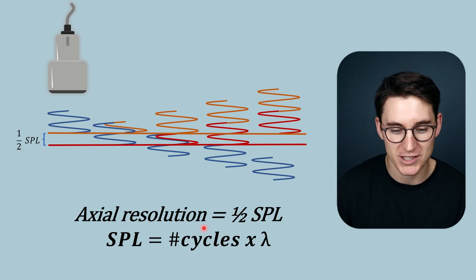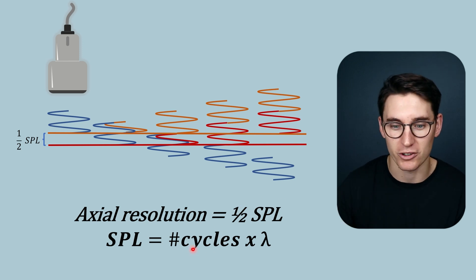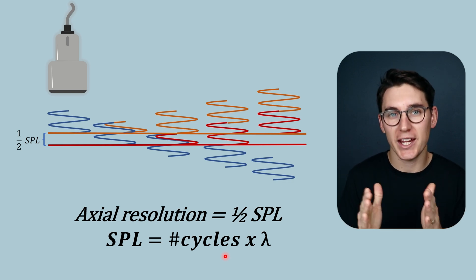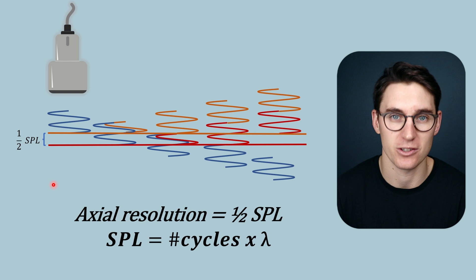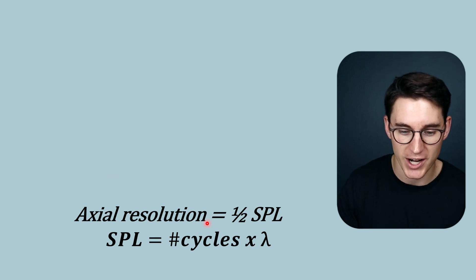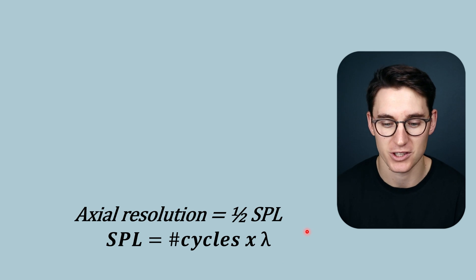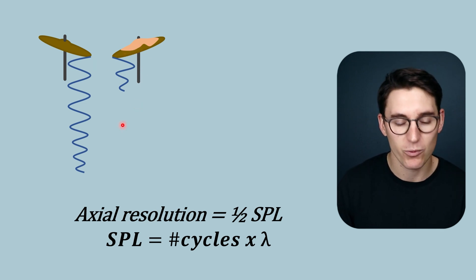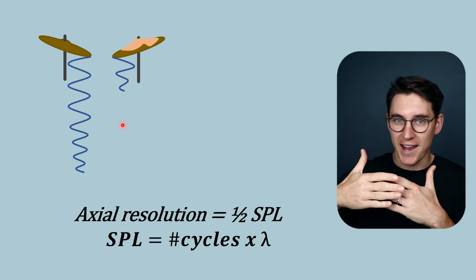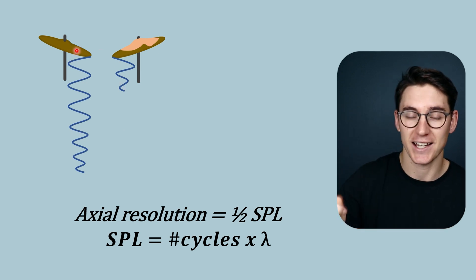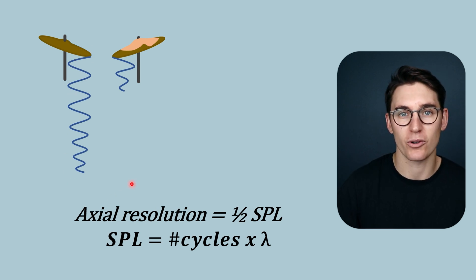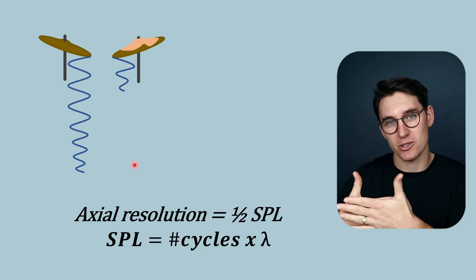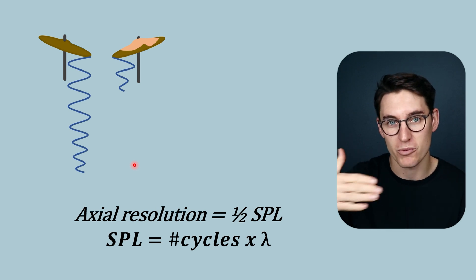Our spatial pulse length is determined by the number of cycles within the pulse as well as the wavelength of that pulse. There are various factors we can change to alter the spatial pulse length and ultimately the axial resolution. The first is changing the number of cycles within the ultrasound pulse. When we looked at creating an ultrasound pulse, we looked at dampening: if we fire a piezoelectric crystal and let it resonate at a set frequency, like hitting a cymbal, that crystal will ring for a long time releasing ultrasound pulses into the tissue.